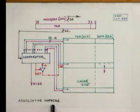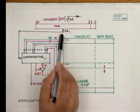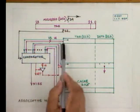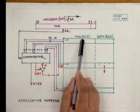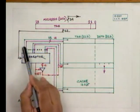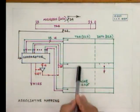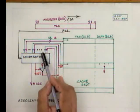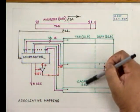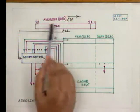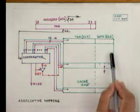Let us see how this associative mapping works. When the CPU generates an address — either an instruction address or a data address — this 22-bit address is brought to a comparator. The content of the tag field of every cache line, which holds the block addresses, is all compared in parallel. If any one of these tag fields equals the tag field of the address thrown by the CPU, then it is a hit, meaning that block's content exists in cache and can be retrieved.